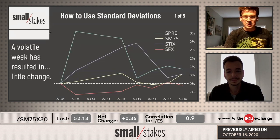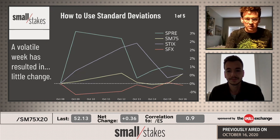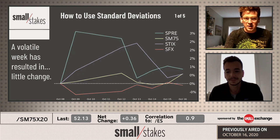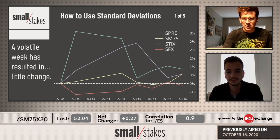We've seen a couple of great opportunities recently, especially looking at SPRE and SFX in opposing directions — big up move on the eighth, if you sold it there on the ninth and then the following Monday the 12th, big reversion day. Similar here in SFX, big sell-off on that eighth and then a reversion over the next couple of days there.